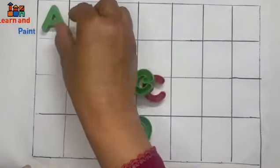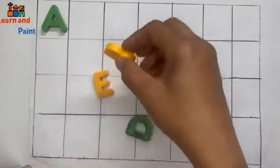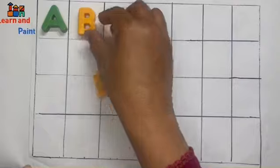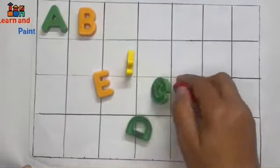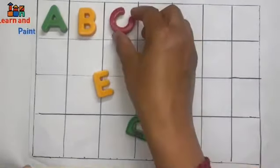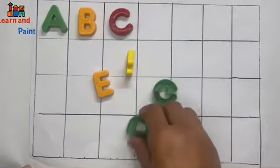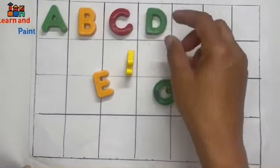A. A for Apple. B. B for Ball. C. C for Cat. D. D for Duck.